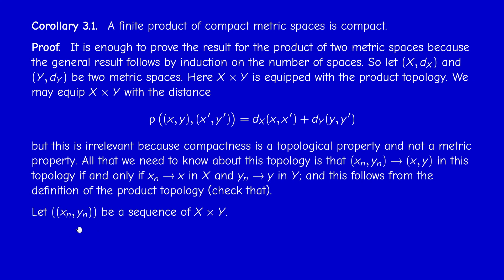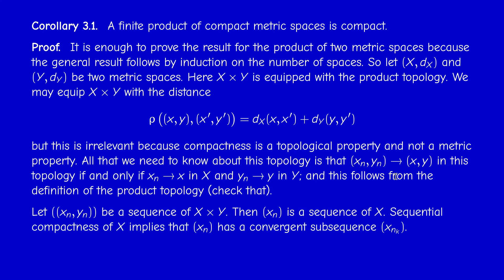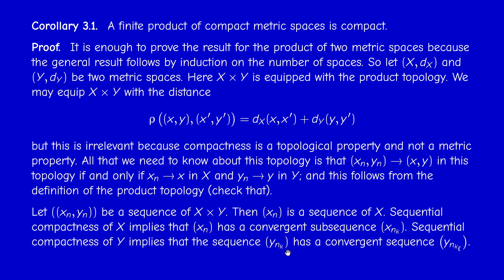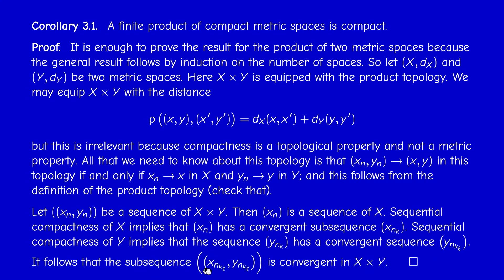Given a sequence of pairs (x_n, y_n), consider the first component x_n as a sequence in X. Since X is compact, hence sequentially compact, x_n has a convergent subsequence x_{n_k} converging to some x. Now consider y_{n_k}, a sequence in Y. Since Y is compact, hence sequentially compact, y_{n_k} has a convergent subsequence y_{n_{k_l}}. Since x_{n_k} converges, x_{n_{k_l}} also converges, and therefore the pair (x_{n_{k_l}}, y_{n_{k_l}}) converges to (x, y).